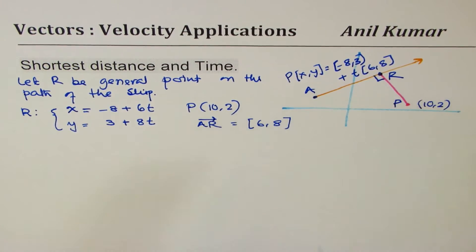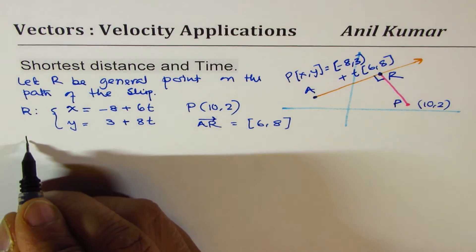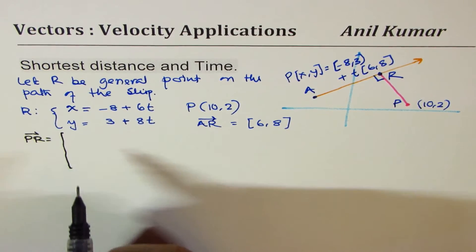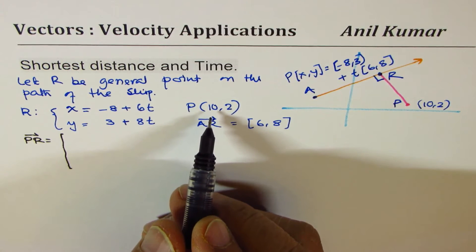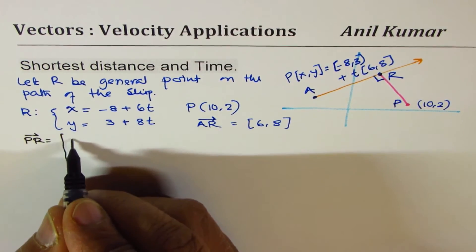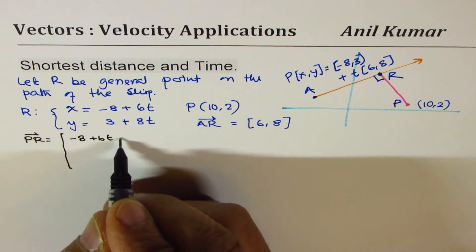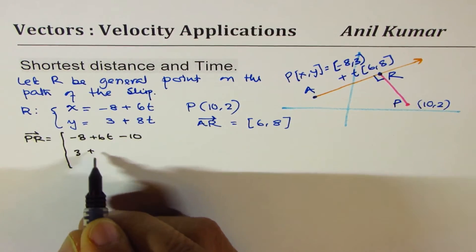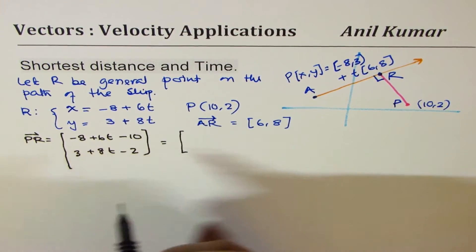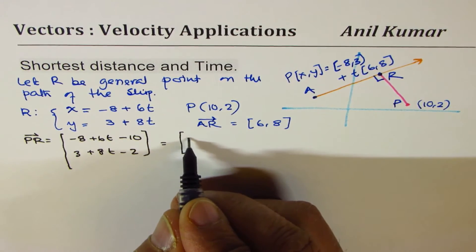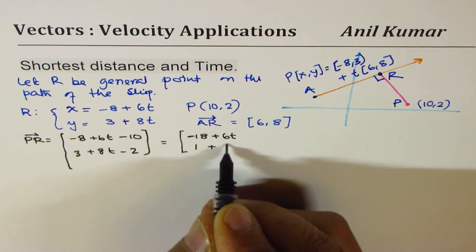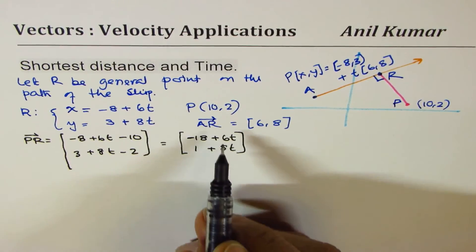We know what P is. P is (10, 2). And we know what direction AR is in. So let's say AR direction is known to us. And this is (6, 8). You could also write (3, 4) simplified. Now that should help us to figure out everything. So first, let's find what PR is. So let's find what PR is. So PR will be, to find PR, let's do in vertical form, we could do 10 minus this. So these are the two vectors. R is -8 + 6T. We'll take away 10. And the Y value is 3 + 8T. We'll take away 2.